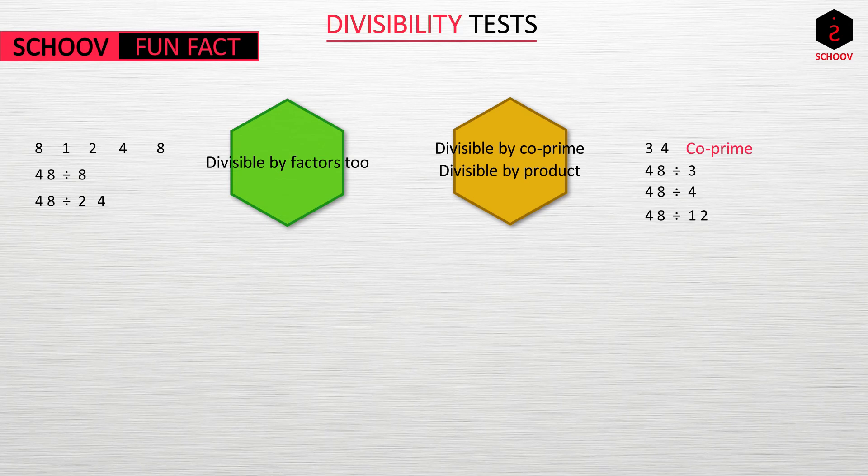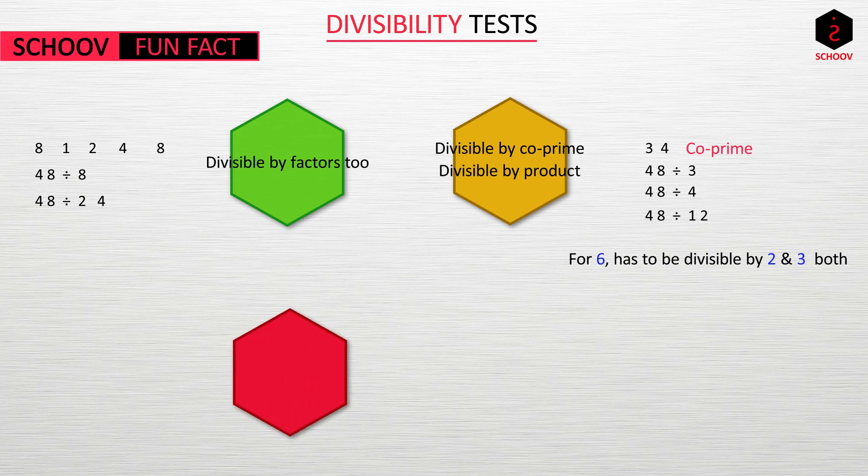That's how we get the test of some numbers that we have not studied. So for a number to be divided by 6, it must be divided by 2 and 3 both. Now, sum and difference of numbers. If two numbers are divisible by a number, their sum is also divisible by the number.